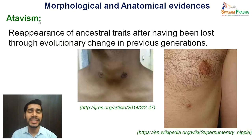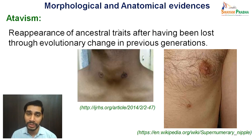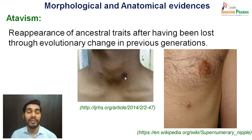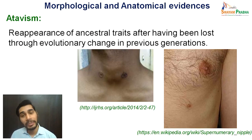Yet another phenomena is called atavism. Atavism is the reappearance of ancestral traits after having been lost through evolutionary change in previous generations. There are some ancestral traits which used to be there in ancestral forms but got lost, and for generations we did not have these characters, but suddenly they reappear in some forms. Examples include the existence of a cervical fistula and supernumerary or additional nipples in males. These are characters which reappear suddenly but were present in ancestral forms with no existence for many generations.